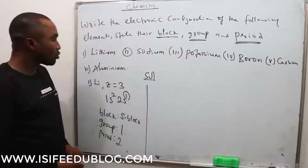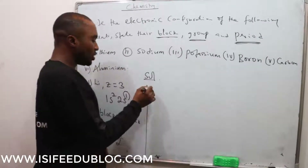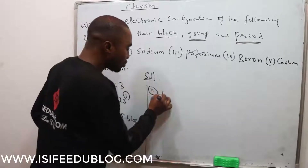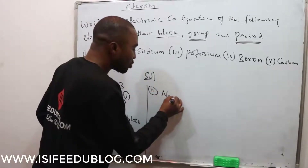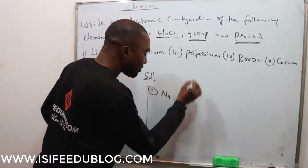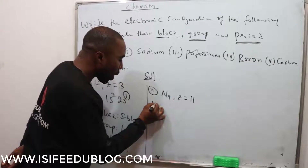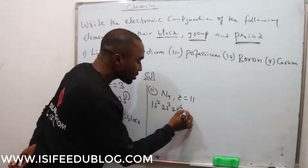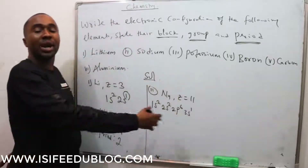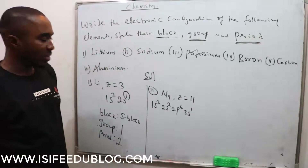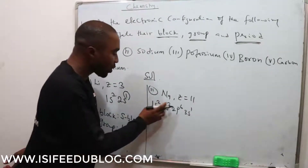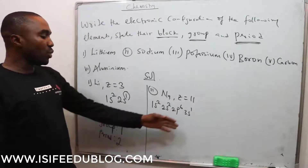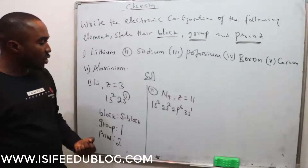Number 2 is sodium. We write the electronic configuration of sodium. The atomic number of sodium is 11. That gives us: 1s² 2s² 2p⁶ 3s¹. If you count the electrons: 2 plus 2 is 4, plus 6 is 10, plus 1 is 11. We have written the electronic configuration.